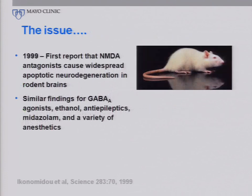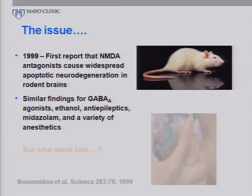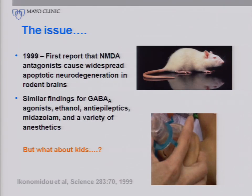First, a disclosure. You all well know the issue that we've known for several years now, thanks to this paper and then to much of the work that Vesna and her colleagues have done, that there are potential problems in animal models observed with a wide variety of agents. But as has already been well described, what about the kids?